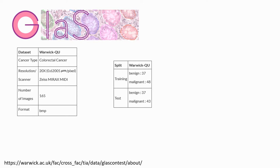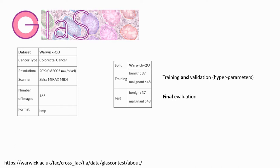We can see that the images come from colorectal cancer, we have information about which machine was used and the format. There are 165 images in total, already split into training and test sets, with some from benign and others from malignant tumors. Only 85 images will be used for training and validation, with 80 left out for testing. Keeping this split is important for comparison with published competition results. We can already note limitations: few images, all taken on the same scanner, meaning high likelihood of overfitting, and results cannot be interpreted as results on the general problem of gland segmentation.